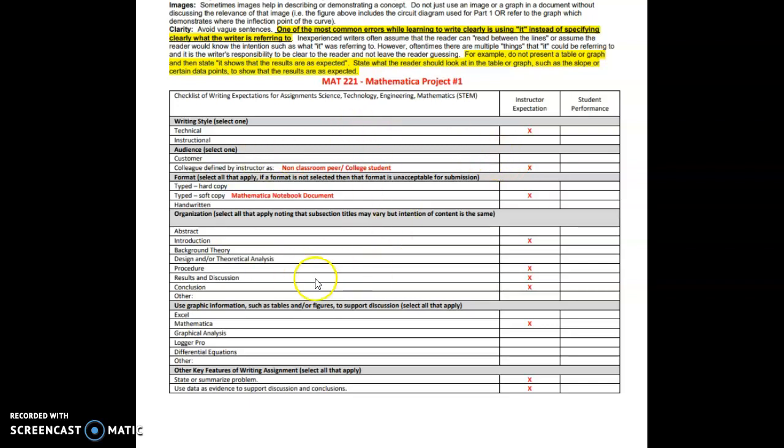So this little checklist is going to be a technical document. I want you to write it as if you were writing it to a non-classroom peer or a college student. In other words, write it as if the student is in college, but not necessarily knows mathematical terminology. I want you to just submit a soft copy, which is your Mathematica notebook. You should give a brief introduction. You should show your procedure as you're going through. Your results and your discussion should be in complete sentences. And you should give me a brief conclusion.